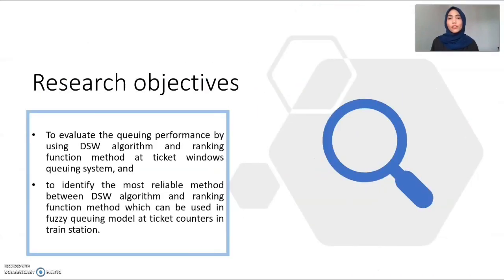Now we are going to look at the research objectives. The first objective is to evaluate the queuing performance of the DSW algorithm and ranking function method at the ticket windows queuing system. The second objective is to identify the most reliable method between the DSW algorithm and ranking function method, which can be used in fuzzy queue models at ticket counters in a train station.